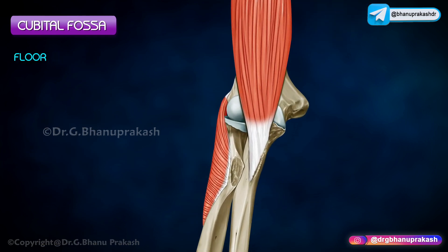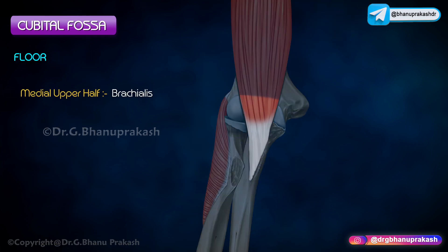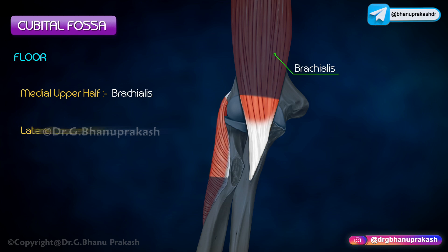Floor: the medial upper half is formed by the brachialis and the lateral lower half by the supinator.